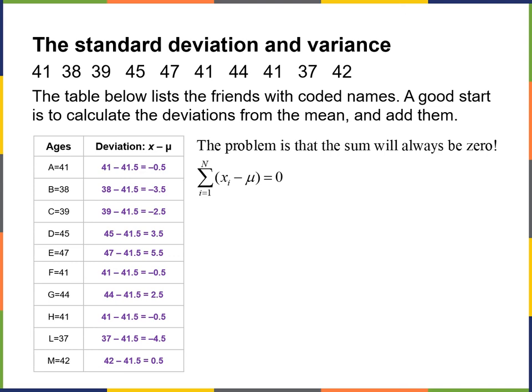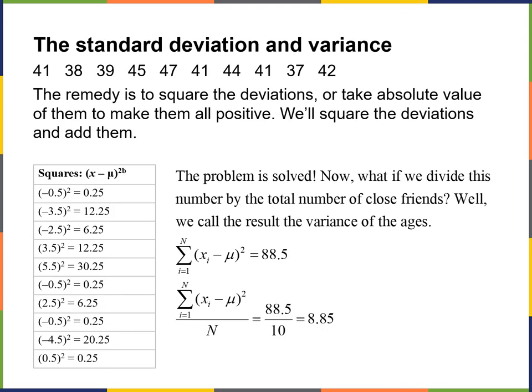The table lists the friends with coded names. A good start is to calculate the deviations from the mean and add them. The remedy is to square the deviations or take the absolute value to make them all positive. We'll square the deviations and add them. If we divide this number by the total number of close friends, we can call that the variance. We will use tools to actually calculate the standard deviation and variance — our job is to understand what that means.